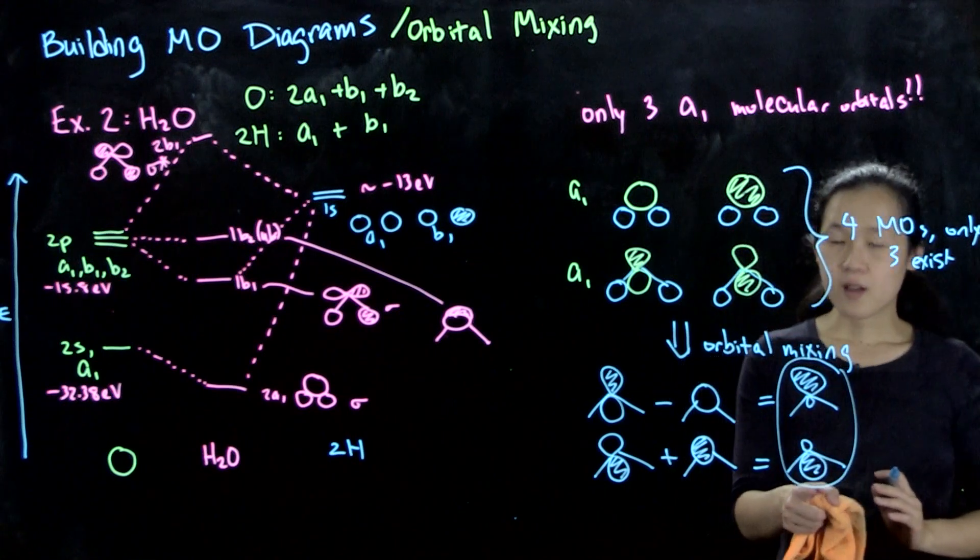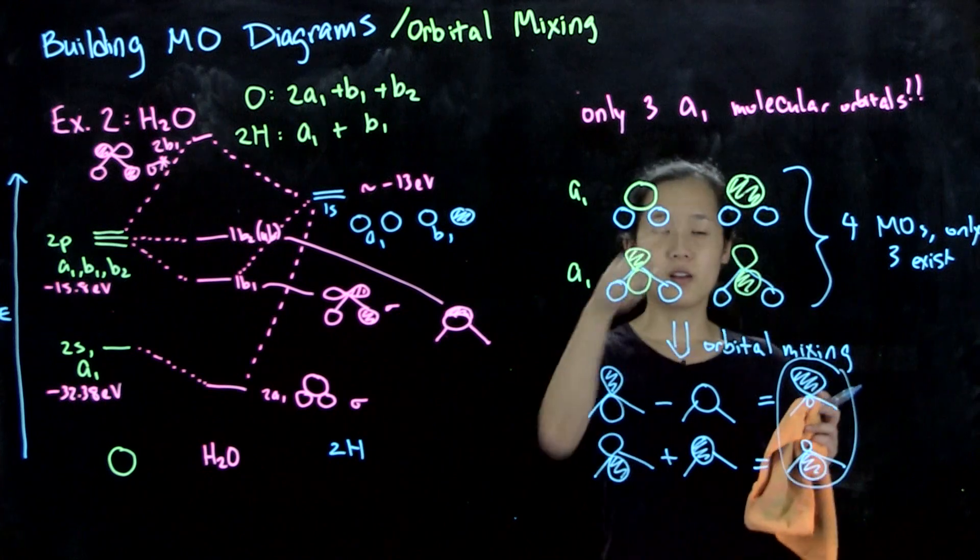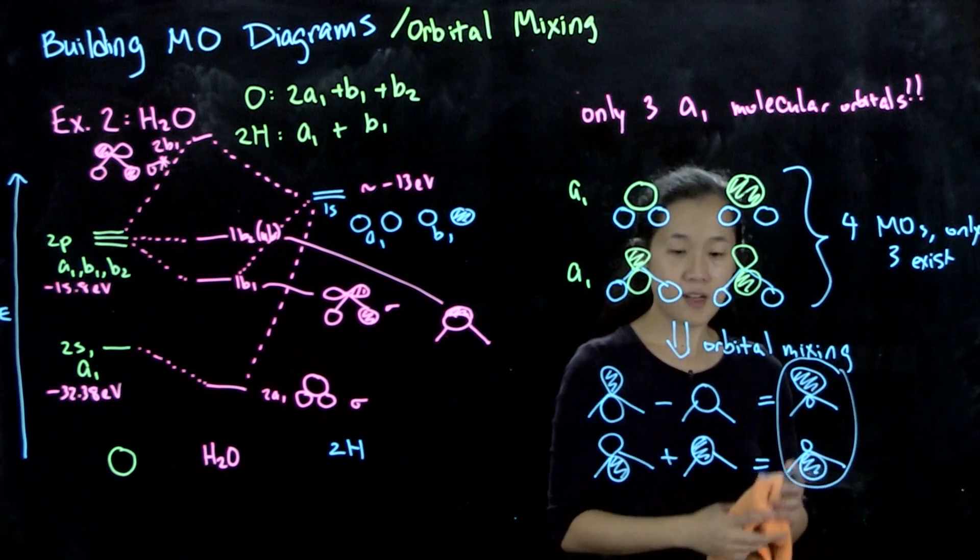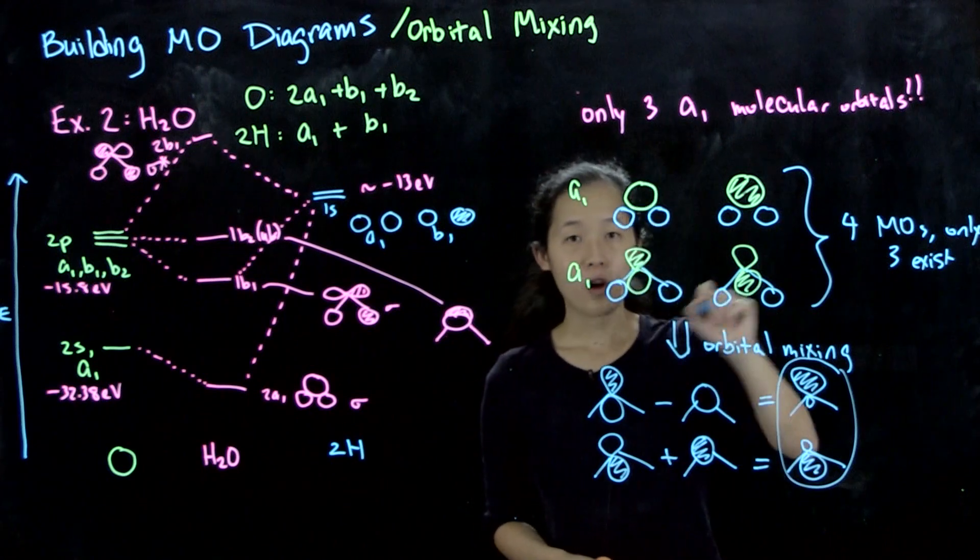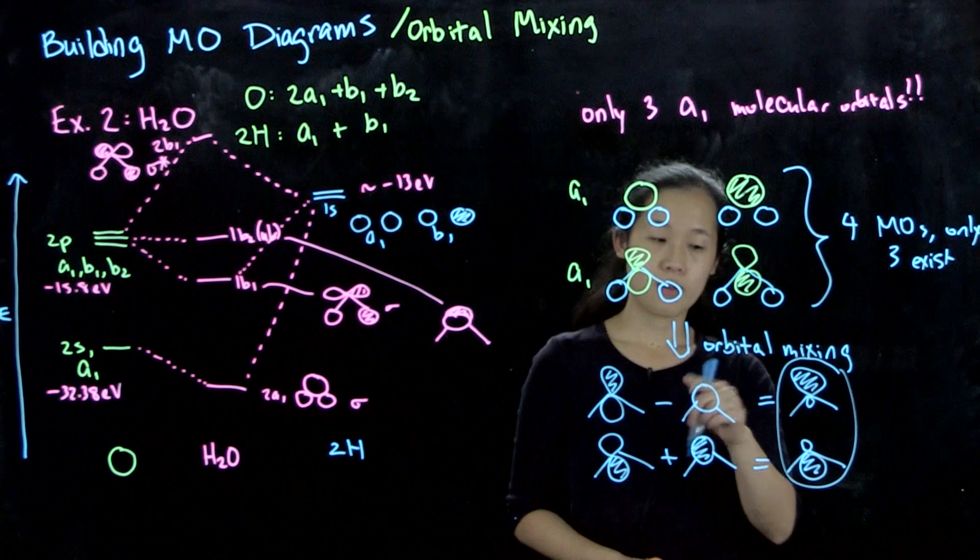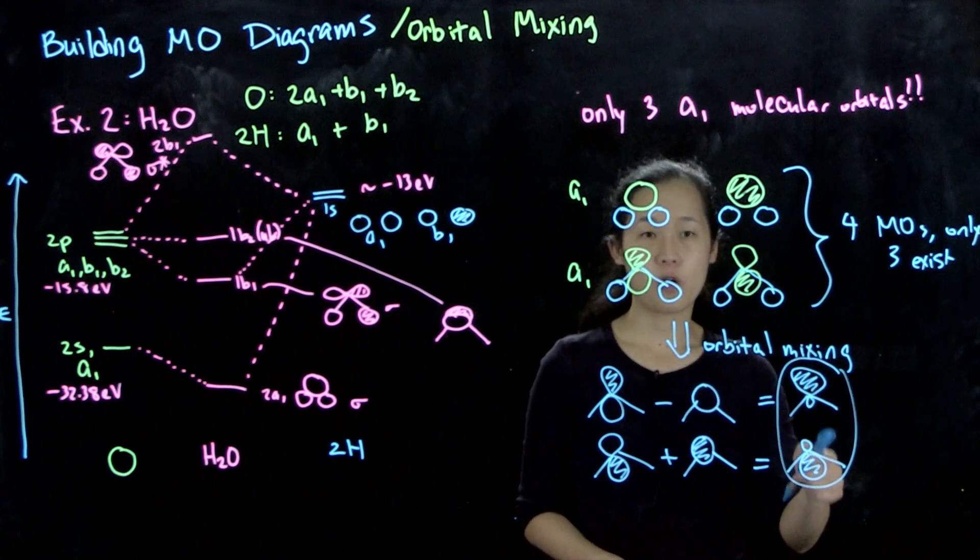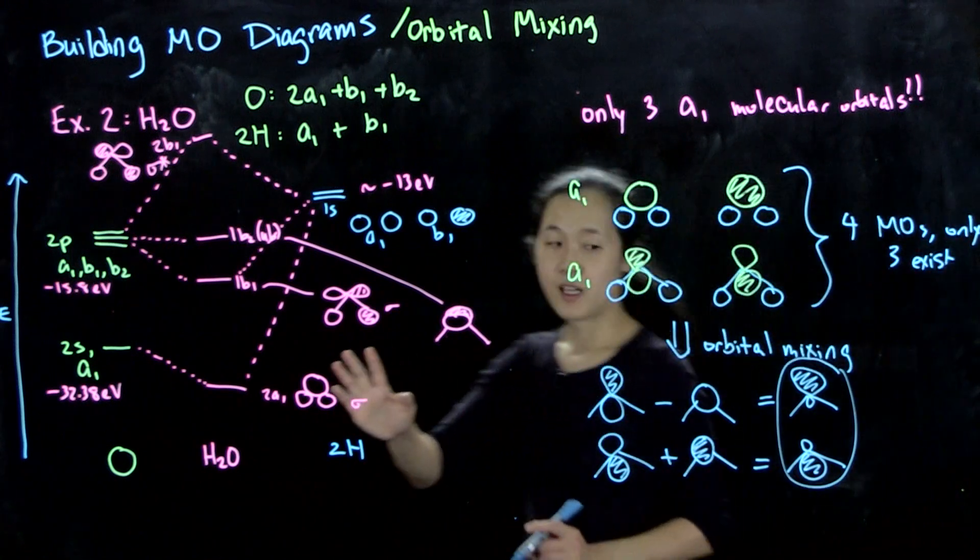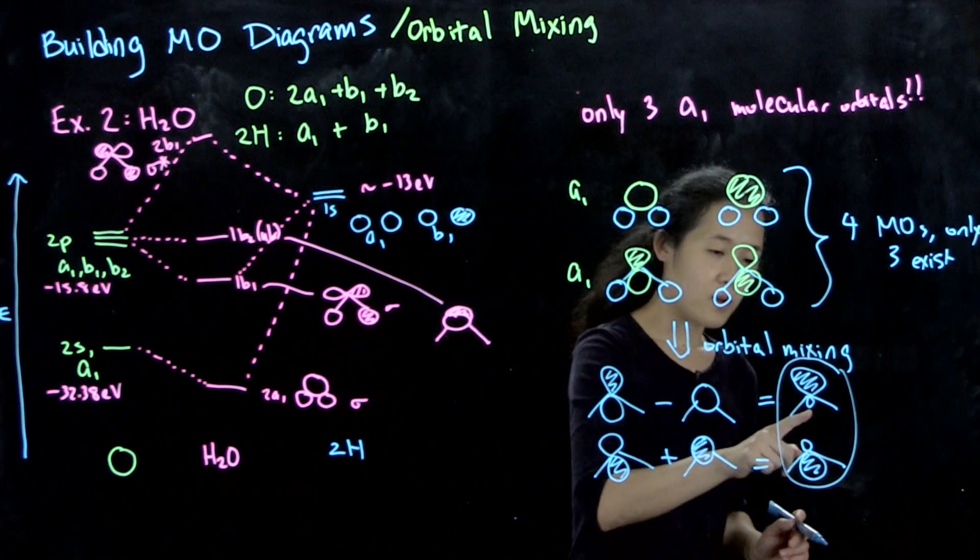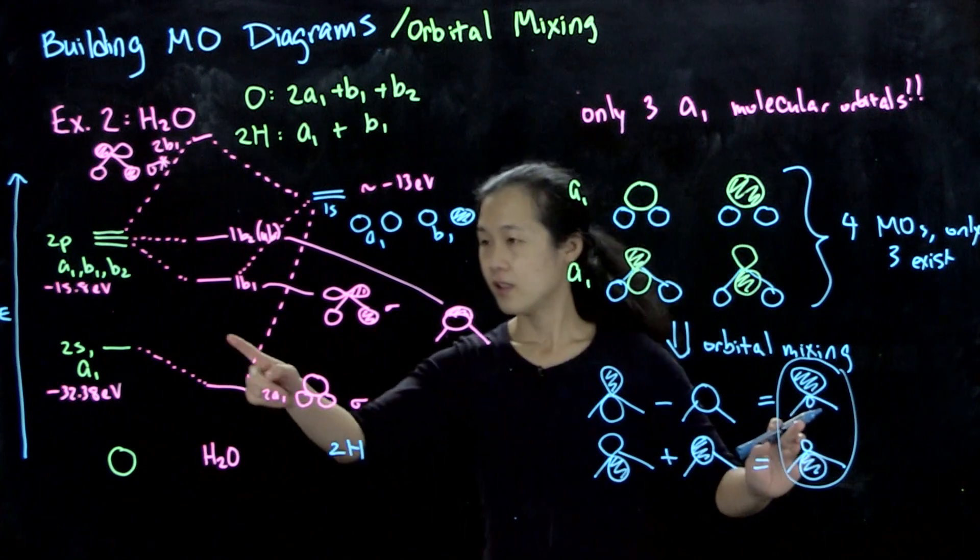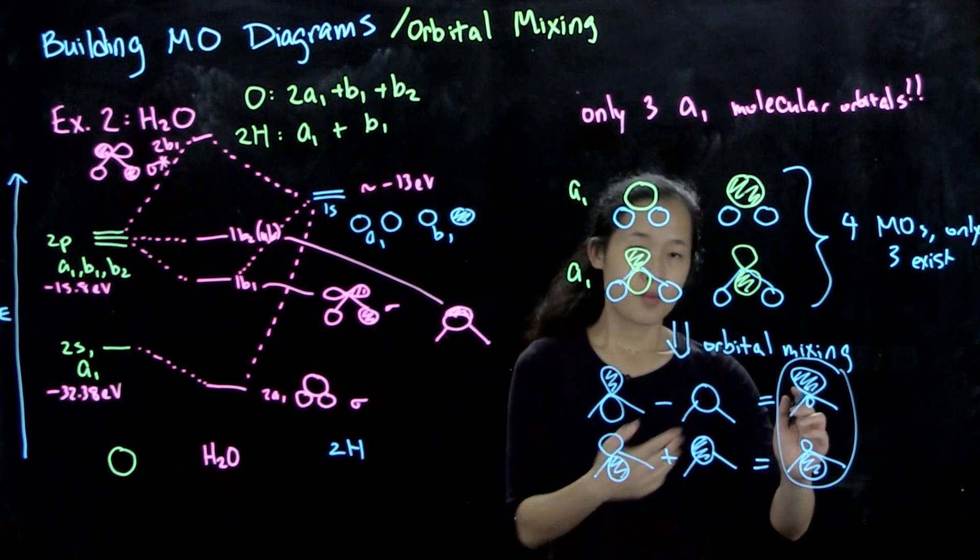Because of that, we could take out a couple of these and mix them. Instead of having these four, we could end up with three orbitals that have combined p and s character with these kind of lobe behaviors. That's what's happening here.